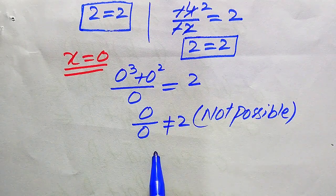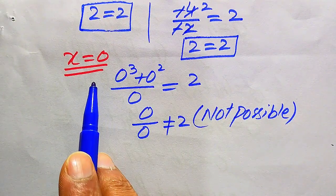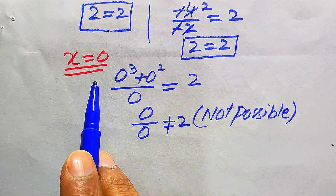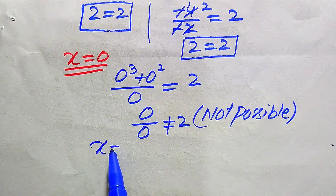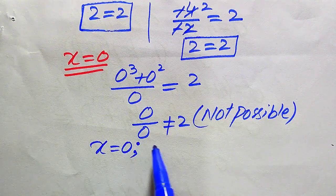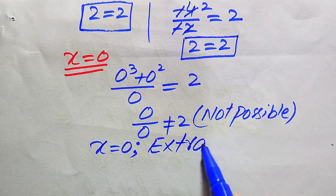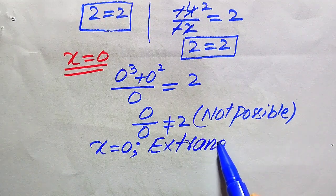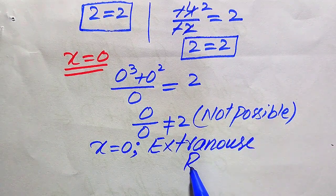If the left-hand side is indeterminate, it means both sides are not equal, so x = 0 does not satisfy our given equation. Therefore we call x = 0 an extraneous root of the given equation.